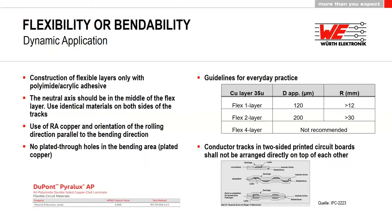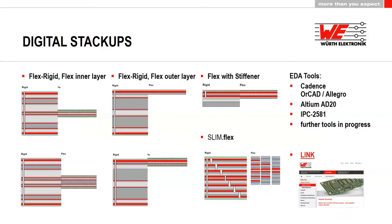Now we come to digital stackups. We have different stackup possibilities for EDA tools — stackups for Cadence, Altium, and IPC-compliant formats. You can download these stackups from our homepage and import them directly into your EDA tool. We have stackups for flex with rigid layers inside, flex rigid layers outside, two layers, four layers, pure flex, flex with stiffener, and slim-flex build-ups.